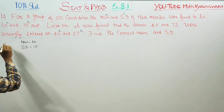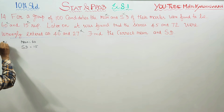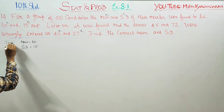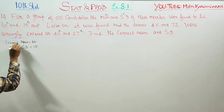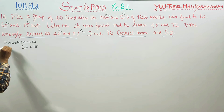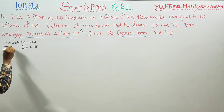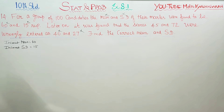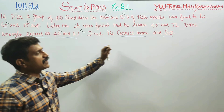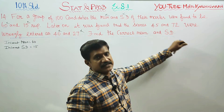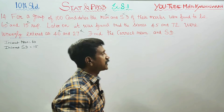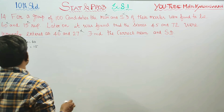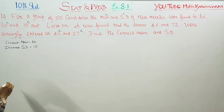This is the incorrect mean. This is the incorrect standard deviation. Mean is equal to 60 — this is the incorrect mean. We will start with the mean calculation to find the corrected values.